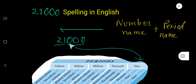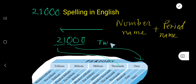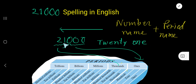In the thousands period, we are getting the number 21. The number name for 21 — we write T-W-E-N-T-Y. So right here we write twenty-one, then we write the period name.